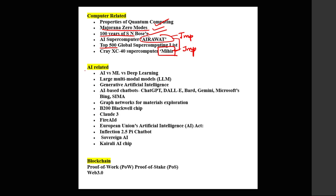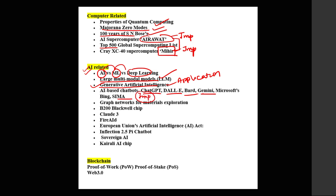The most important theme this year is artificial intelligence. They can ask: what is artificial intelligence, what is machine learning, what is deep learning, what is the difference between them, what is generative AI, and what are the applications of generative AI. They can also ask what are large multimodal language models — very very important. They can also ask you to match the pair: ChatGPT, DALL-E, Bard, Gemini, Sima — all these are AI chatbots in news in the last six months.